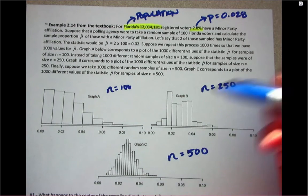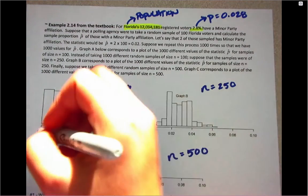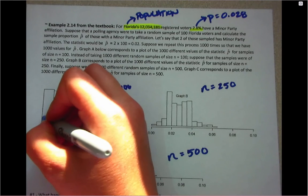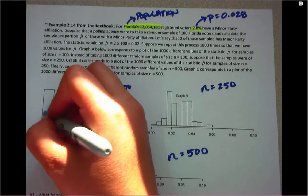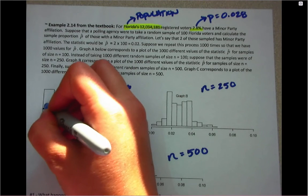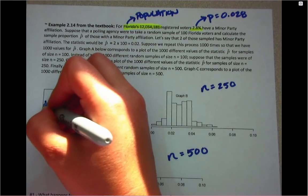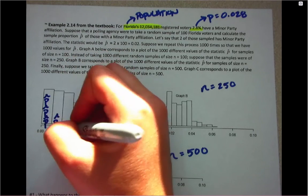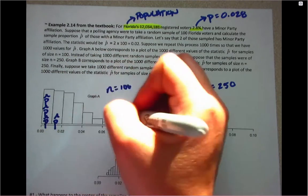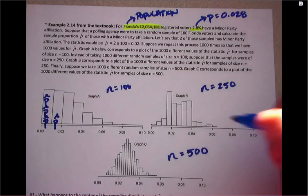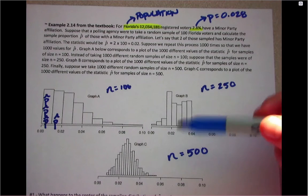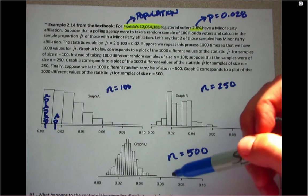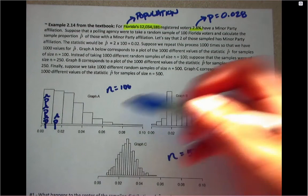Because it's a sampling distribution, what's actually being collected and graphed are many different p-hat values. So these distributions are essentially p-hats and where they fall — they're not people.